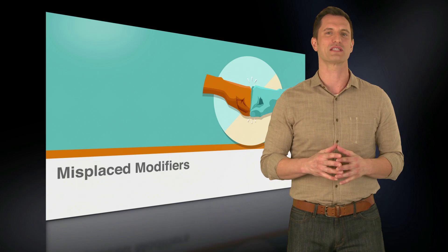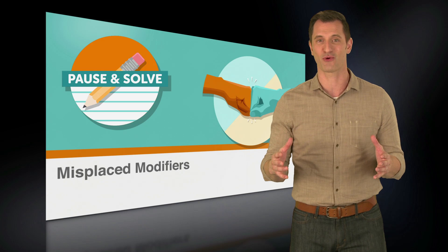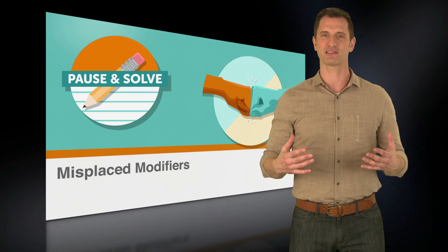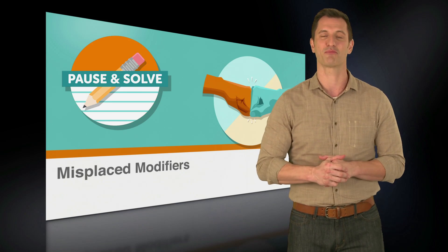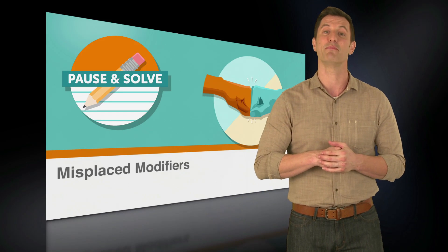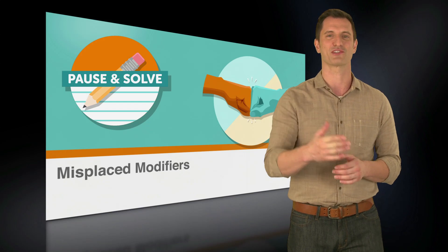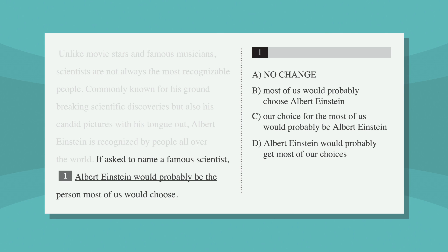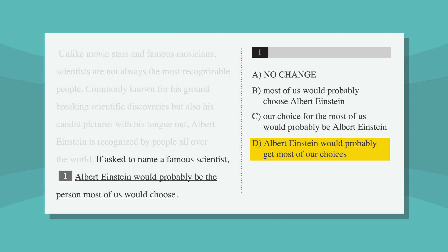Now that we have our modifier rules down, it's time for a pause-and-solve question. Grab some paper and a pencil, and when I say pause, you'll pause this video and solve the problem on your own. Here's the question: 'If asked to name a famous scientist, Albert Einstein would probably be the person most of us would choose.' The answer choices are: A, no change; B, most of us would probably choose Albert Einstein; C, our choice for the most of us would probably be Albert Einstein; and D, Albert Einstein would probably get most of our choices.